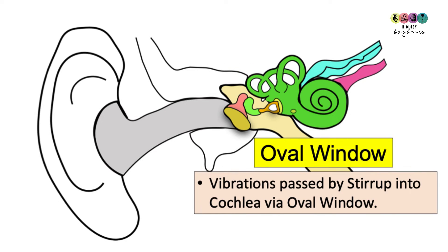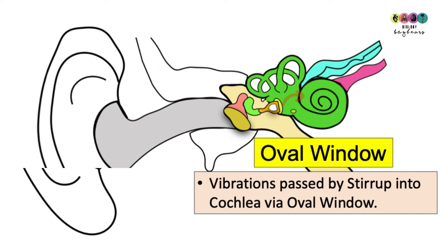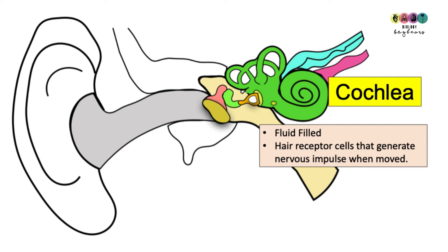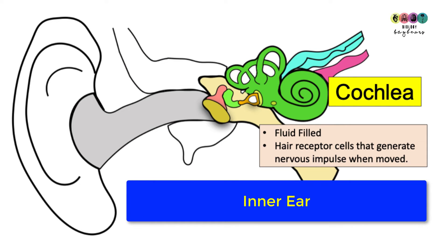The last of the ossicles, the stirrup, is attached to a membrane called the oval window. When the stirrup moves it pulls on the oval window and the vibrations are passed into the cochlea — the innermost part of the ear — through the oval window. The cochlea is part of the inner ear and it's very special because it contains fluid. Unlike the outer ear and middle ear which only had air, the cochlea is fluid filled.